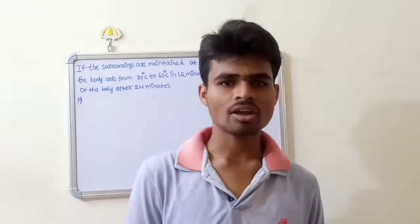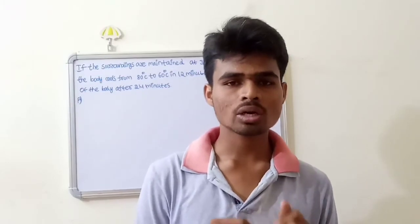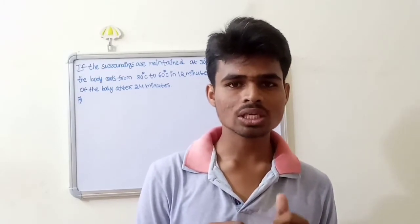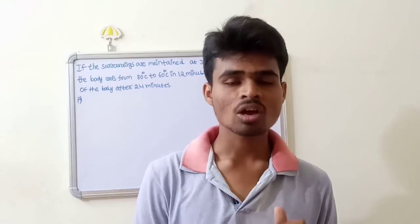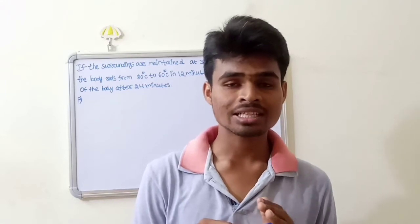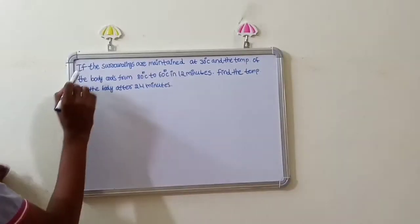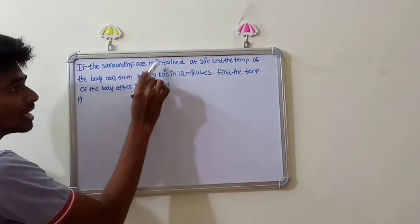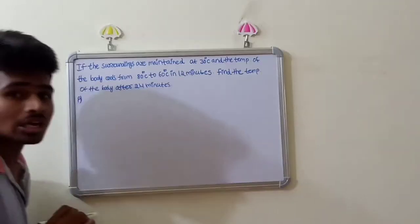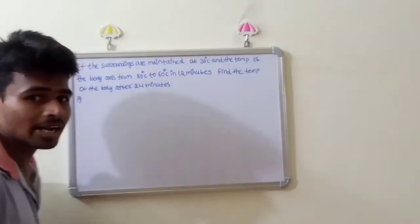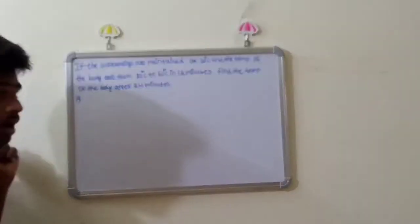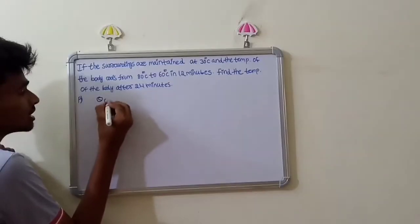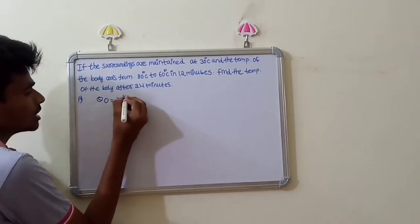Hi guys, welcome to my channel. Today I am going to discuss Newton's Law of Cooling. We have to find the theta value — theta means temperature. The surroundings are maintained at 30 degrees, so theta_s is equal to 30 degrees.